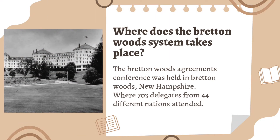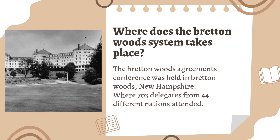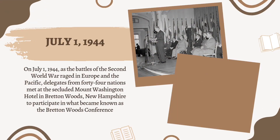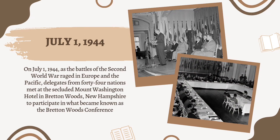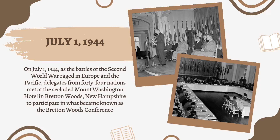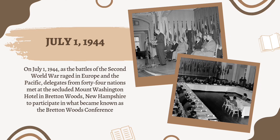Where does the Bretton Woods system take place? The Bretton Woods agreements conference was held in Bretton Woods, New Hampshire, where 703 delegates from 44 different nations gathered on July 1, 1944. As the battles of the Second World War raged in Europe and the Pacific, delegates from 44 nations met at the Mount Washington Hotel in Bretton Woods, New Hampshire, to participate in what became known as the Bretton Woods Conference.